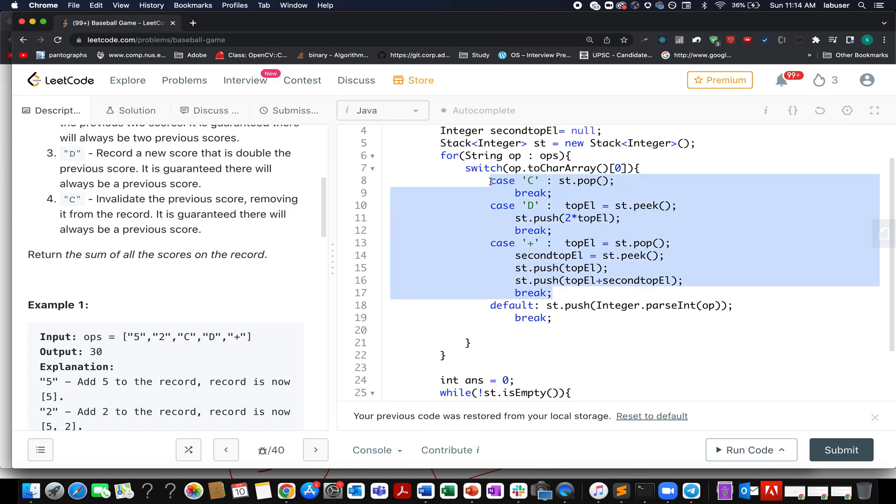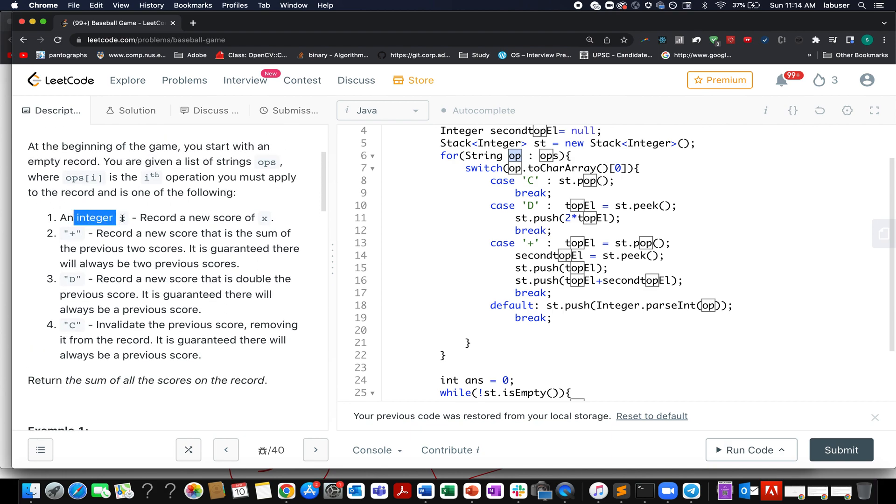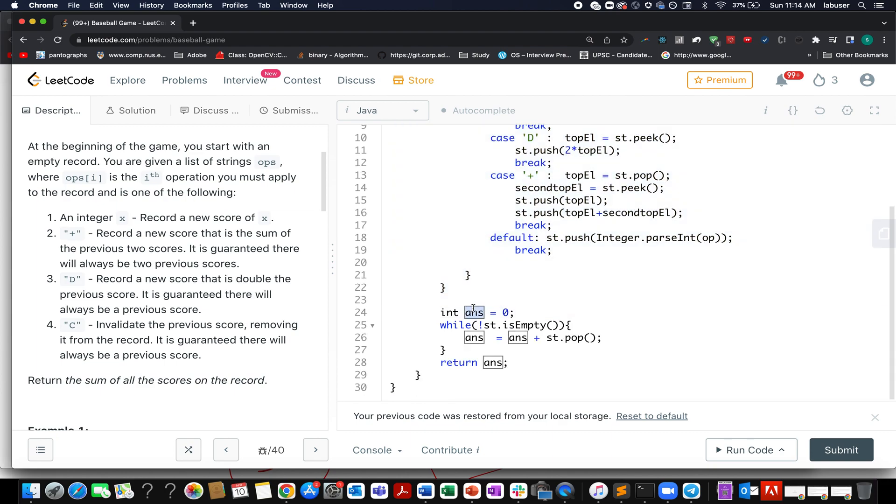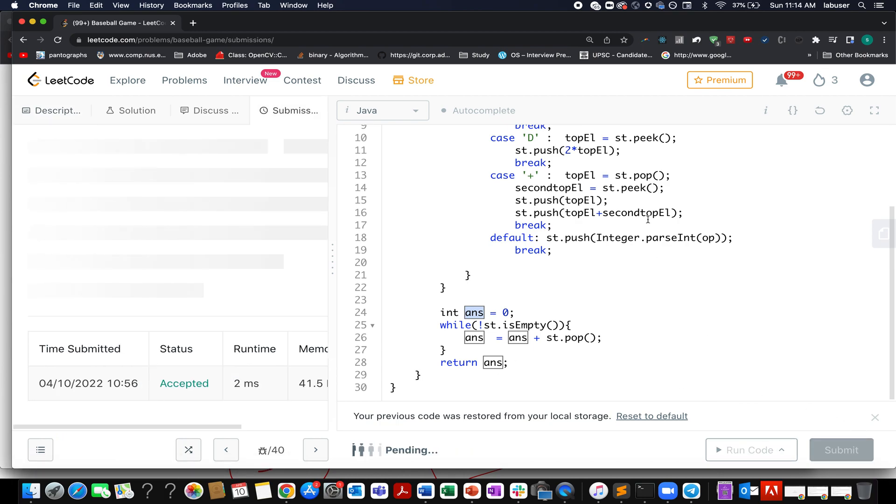Once we are done with these three cases, the last case is very simple. You simply convert this string into integer format because as per the last case, it is going to be an integer value and you simply add it to your stack. Once you are done with this, what do you do? You create an answer variable, you iterate over the stack, you add all the elements that are present onto the stack into the answer string and you simply return the result. So let's shoot for it.